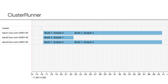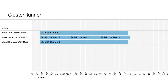Looking at the build visualization, you can see one slave host finished very quickly while two others ran longer. You might notice this isn't the optimal ordering — Cluster Runner will look like this the first time you run a build, but the next time it will optimize by using timing data from the previous run. It runs the longest tests first, and generally you get much better timing on future runs.